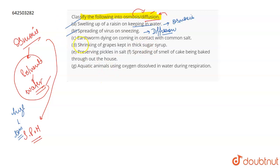The third one is earthworm dying on coming in contact with common salt. Now this is an example of osmosis because the water from the earthworm is dehydrated with the help of common salt and osmosis takes place.